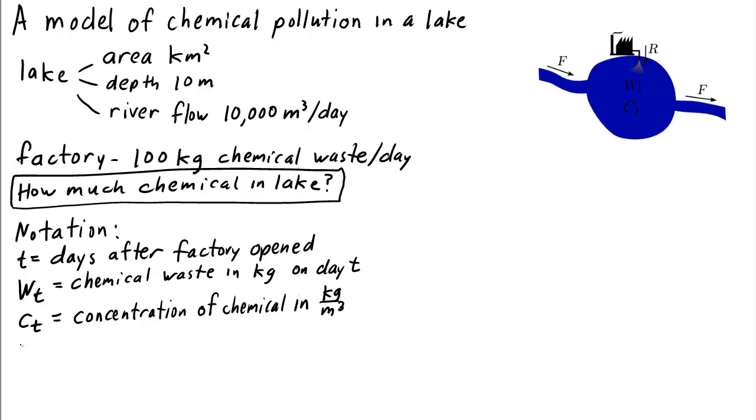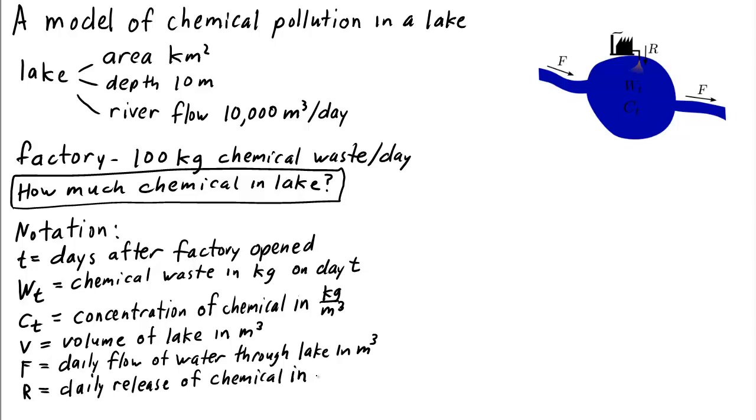Let's also define some parameters. We'll let v equal the volume of the lake in cubic meters, f equal the daily flow of water through the lake in cubic meters, and r equal the daily release of chemical into the lake from the factory in kilograms.